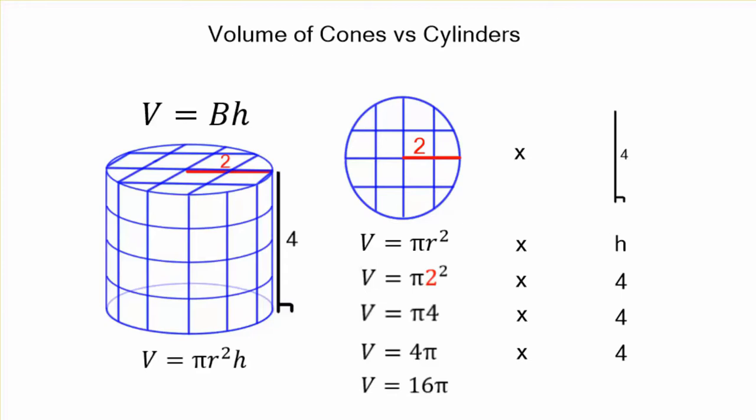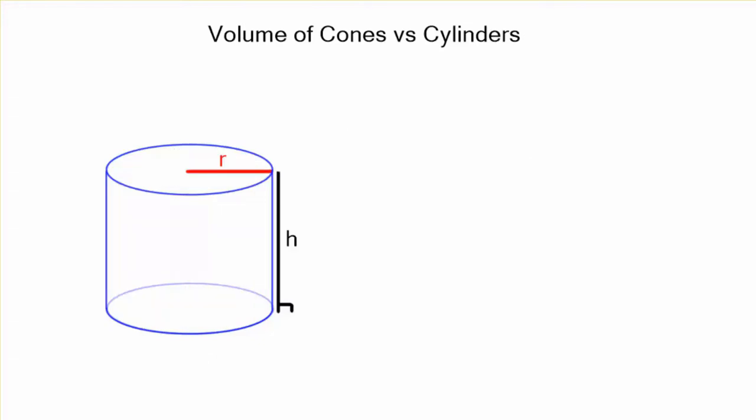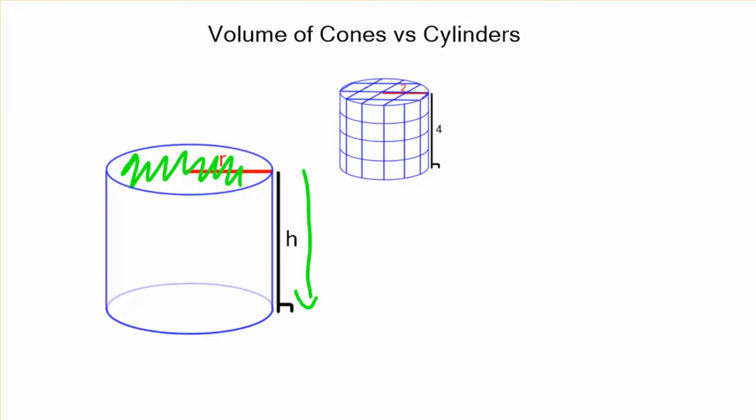That is the total exact volume. But if you multiply times 3.14, you're going to get an approximation of about 50.24. So let's recap. We have our radius and our height. It's two and four. We find the area of the base, pi r squared times our height. And that ends up giving us 16 pi or about 50.24.